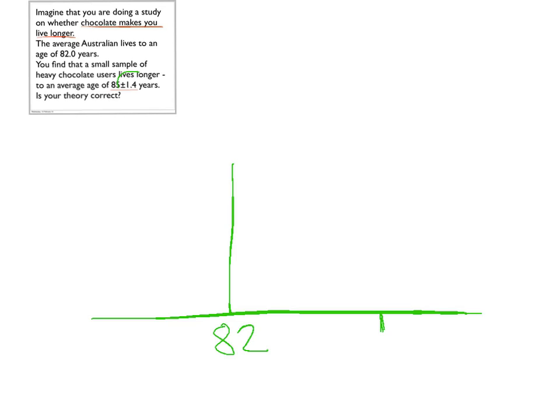But there is an uncertainty, an uncertainty of 1.4 years. So that means if the null hypothesis was true and people did live 82 on average, every time you measured a small sample of them, you get a value which was a little bit off that. And that has a standard deviation of 1.4.